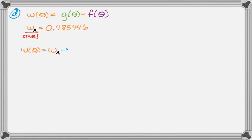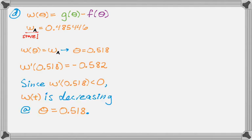And now we need to somehow solve the equation. So I'm going to just write this out, W of theta equals W sub A. And my calculator told me that theta that makes that happen is 0.518. I have no reason to doubt that. And so the question now is, is W of theta increasing or decreasing at that value of theta? So I'm going to find W prime of that value. So W prime of 0.518, negative 0.582. And then I can answer the question because that's negative, so W is decreasing at that value. So since W prime of 0.518 is less than 0, W of theta is decreasing at theta equals 0.518. And that's it.